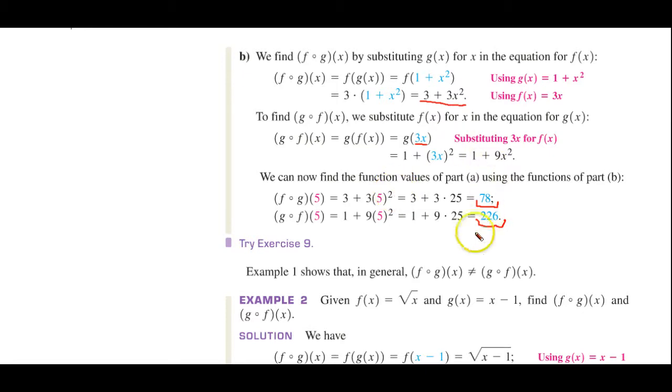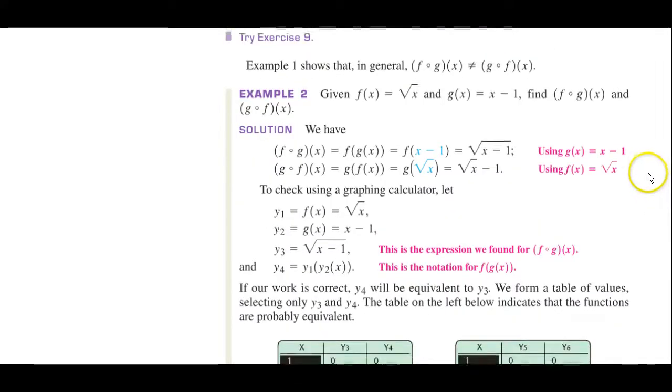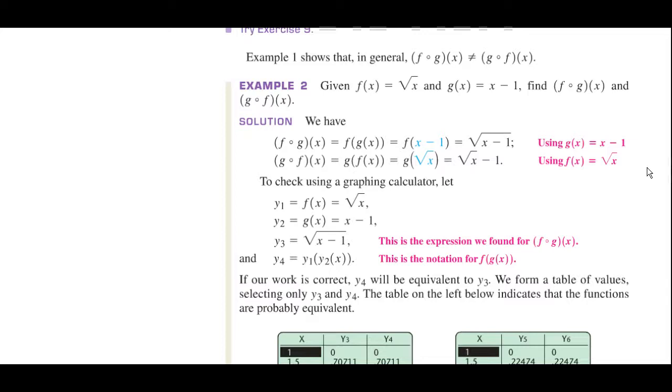Now, notice that here they're saying in example one shows that in general that (f∘g)(x) and (g∘f)(x) they do not equal each other. 78 does not equal 226. Well here's another example and again I know that was a little bit confusing, so you may have to go over it again and of course as you practice it you will develop your skill.